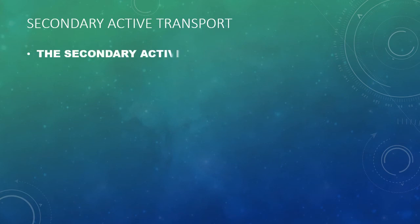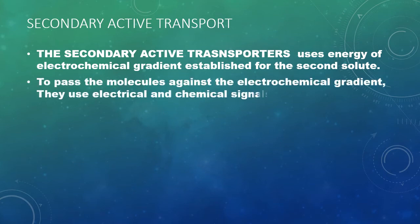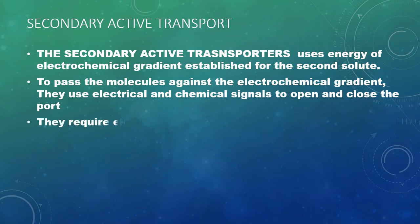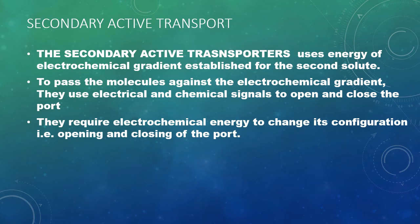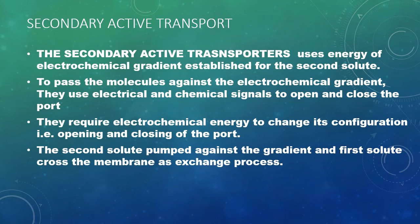Secondary active transporters use the energy of an electrochemical gradient established for a second solute. To pass molecules against the electrochemical gradient, they use electrical and chemical signals to open and close the port. They require electrochemical energy to change configuration, whereas primary active transport requires ATP. The second solute is pumped against the gradient and the first solute crosses the membrane as an exchange process. These are also called antiport processes or exchange diffusion.